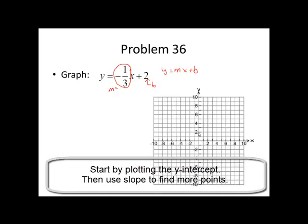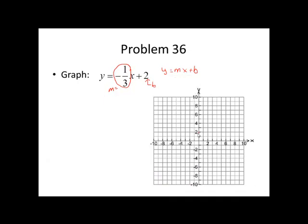To graph it, we'll begin by putting a point at the 2 on the y-axis. And then the slope is negative 1 third, so down 1, 3 to the right. Down 1, 3 to the right. We can keep doing that as far as we wish. Draw the line that goes through those points again. Forgive the lack of a ruler here. But start at 2, down 1, 3 to the right.